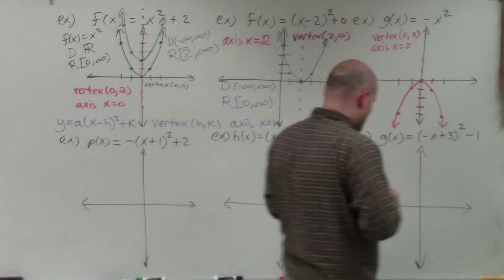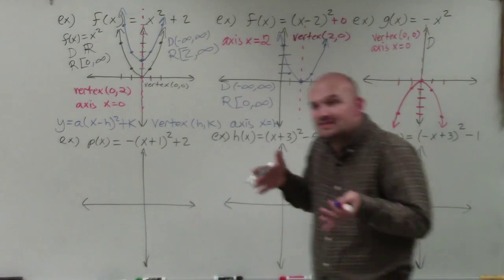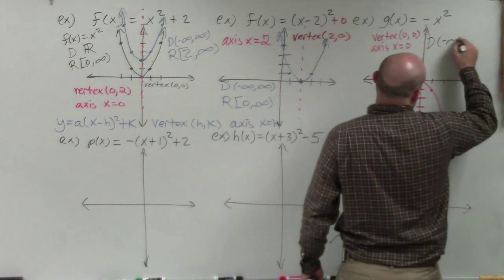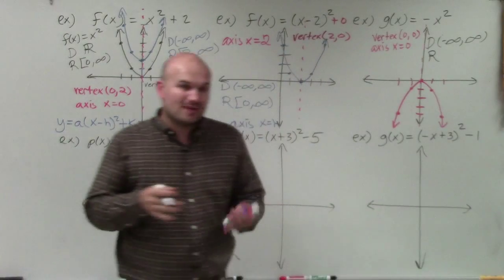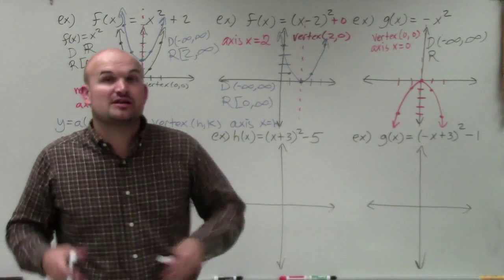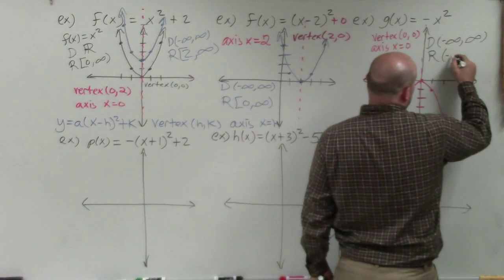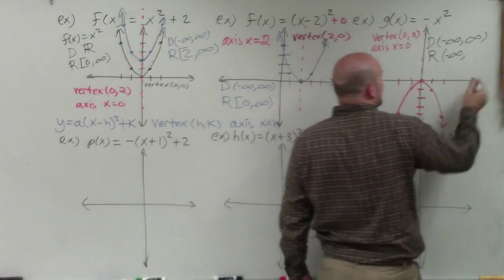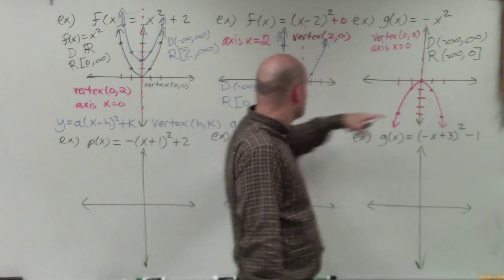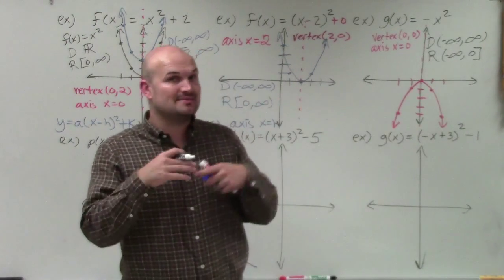For domain and range with this downward-opening graph: the domain is negative infinity to infinity since it still expands in both x-directions. The range goes from negative infinity up to only 0, since the graph only reaches as high as 0. So the range is negative infinity to 0 (with a bracket on 0). Notice the vertex here is called our maximum, whereas for upward-opening parabolas the vertex is our minimum.